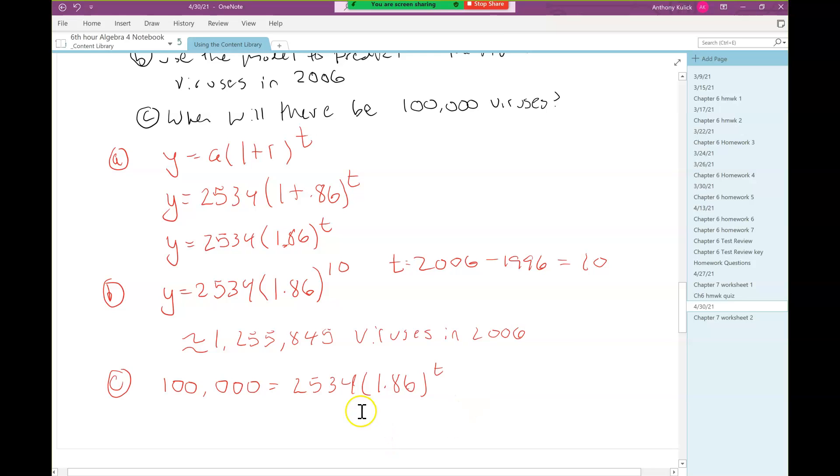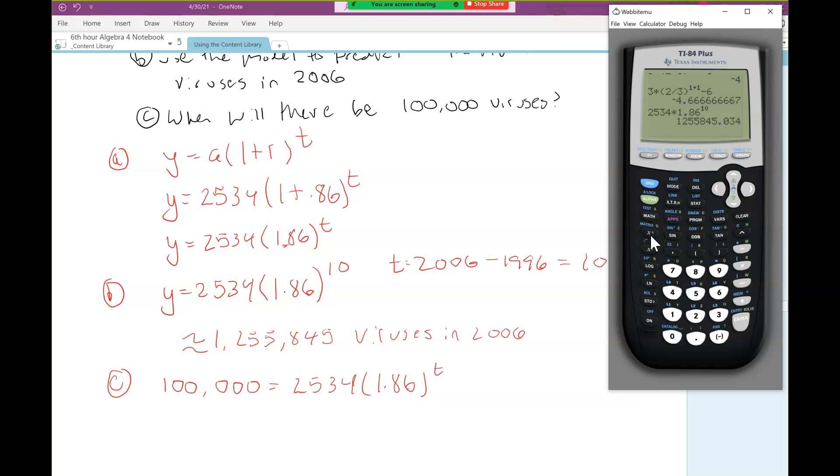That's something we're going to be building up throughout this chapter. But even though we can't do this algebraically, we can still handle this using our calculator. We're going to do this graphically. I'm going to go to the y equals menu. In one y spot, I'm going to put the left hand side, 100,000. In the other y spot, I'm going to put the right hand side: 2,534 times 1.86 to the x.